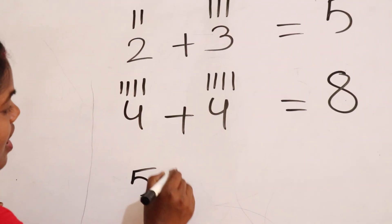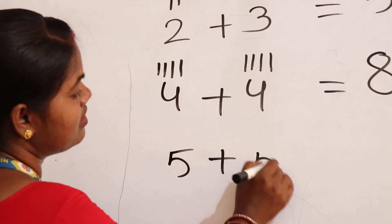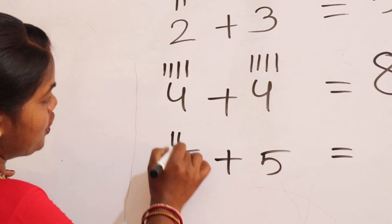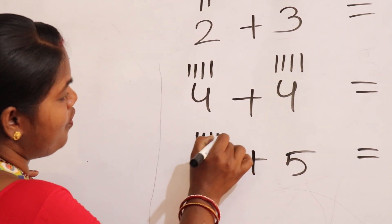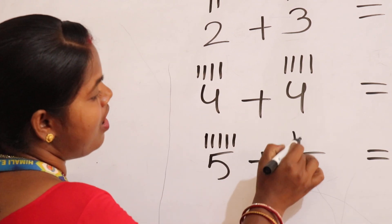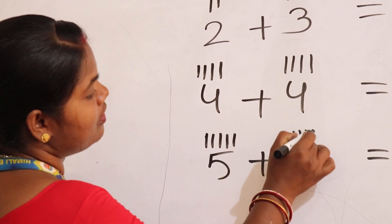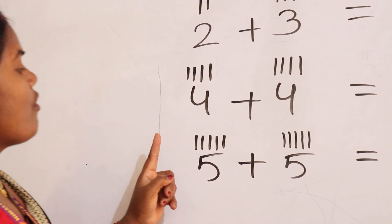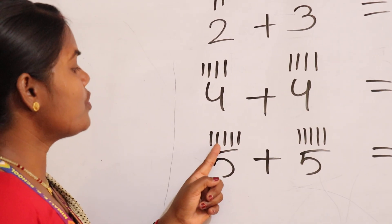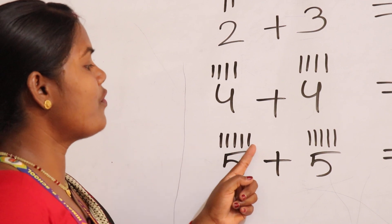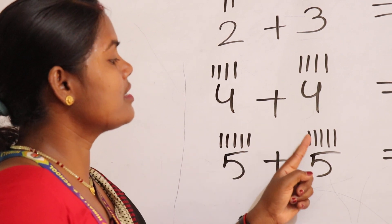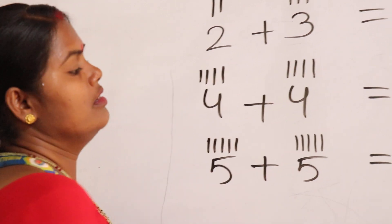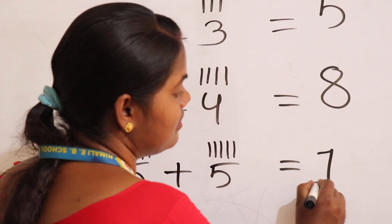5 plus 5. 1, 2, 3, 4, 5. 1, 2, 3, 4, 5. Count all the lines: 1, 2, 3, 4, 5, 6, 7, 8, 9, 10. Answer is 10.